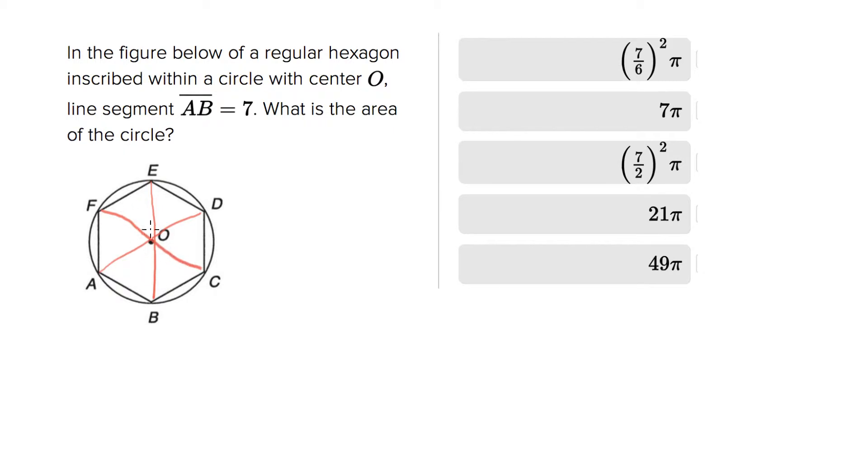Then what that creates is six equilateral triangles. So I know that this triangle AOB, that's an equilateral triangle. And since it's equilateral, what I know is that the length of AB is equal to the length of AO. And they tell us AB is seven, so I know that AO is seven.